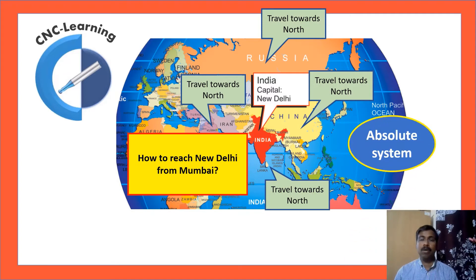A person in Russia also gave the same answer and the same with Saudi Arabia. This system is called absolute system. So, there is an absolute reference from which the direction is taken. Reference is fixed to Mumbai. So, this system is called absolute system.